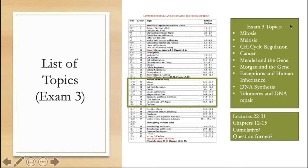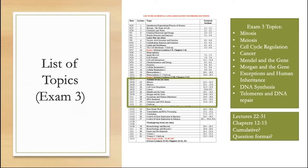I've gone ahead and made that list to the right here — these are the exam three topics, what these students are being tested on in this exam, including which lectures and chapters those are. As a student, you'd also want to make sure you knew whether or not the exam was going to be cumulative — is it covering topics from August to now, or just covering topics between exam two and exam three? You'd also want to know the question format: multiple choice, short answer, fill in the blank, or something in between. These are helpful things to know because you can use this information to format your study guide.